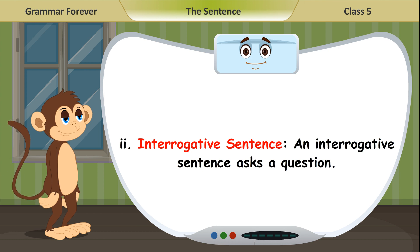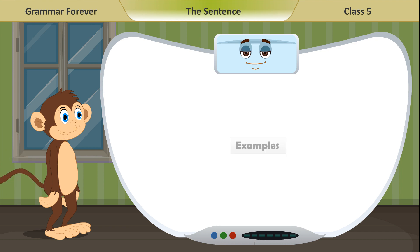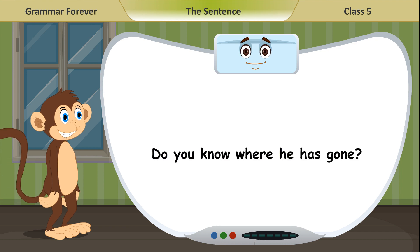Second, interrogative sentence. An interrogative sentence asks a question. It ends with a question mark. Examples: Do you know where he has gone? What have you done?